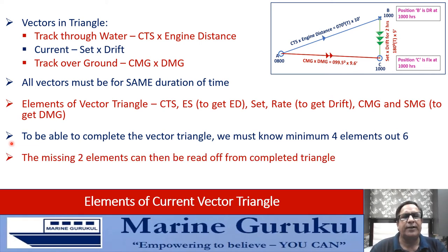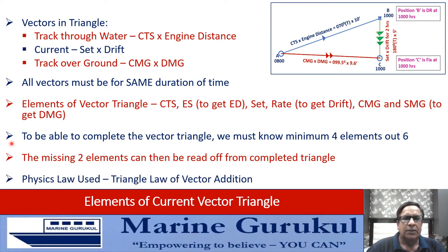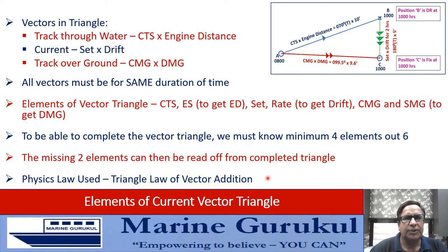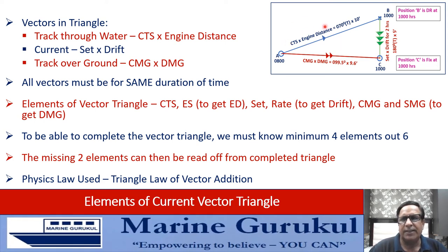The physics law used in the vector triangle is the triangle law of vector addition: if two sides of a triangle taken in the same order represent two vectors, then the third side taken in the opposite direction represents their resultant. Here, CTS and current vectors are in the same direction (both clockwise), and the CMG vector — the third side taken in the opposite direction — is their resultant: track over the ground is the resultant of track through water and current.